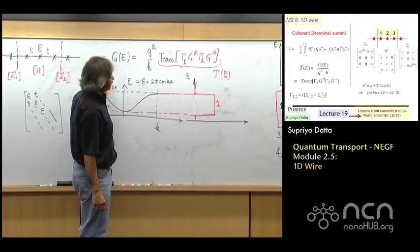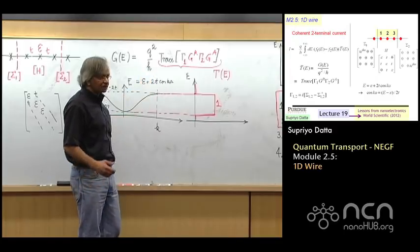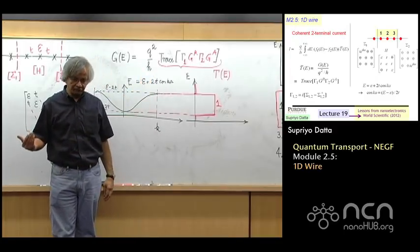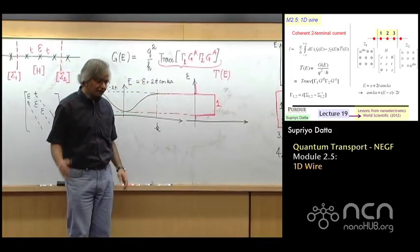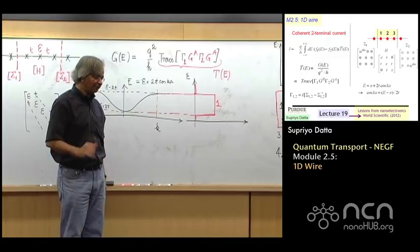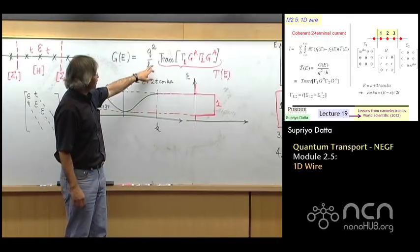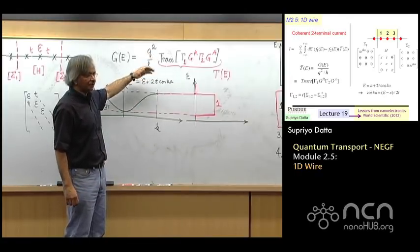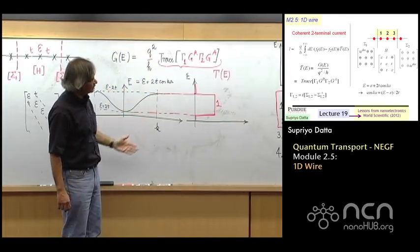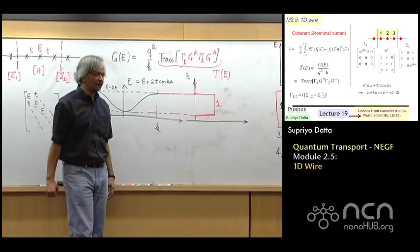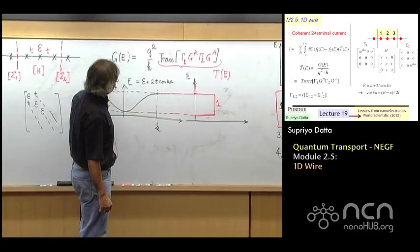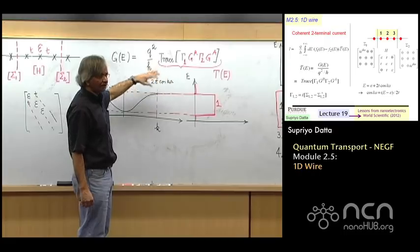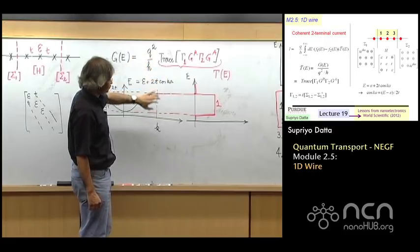But the important thing is, now this quantized conductance comes automatically out of it. So back in those early lectures, I had to argue heuristically about why it may be quantized. But here, of course, we now have a method that takes into account the wave nature of electrons, and so the quantized conductance comes automatically out of it. You get this Q square over H.